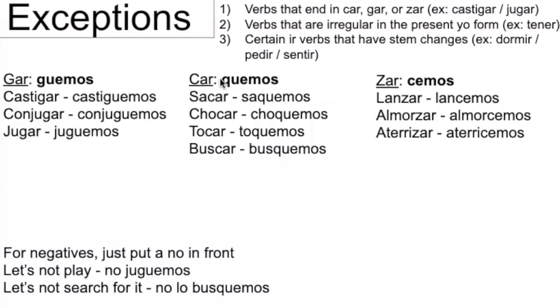With -car verbs, it changes to a Q. So 'sacar' is 'saquemos.' 'Chocar' — to collide — is 'choquemos.' And 'buscar' — to look for — is 'busquemos.'